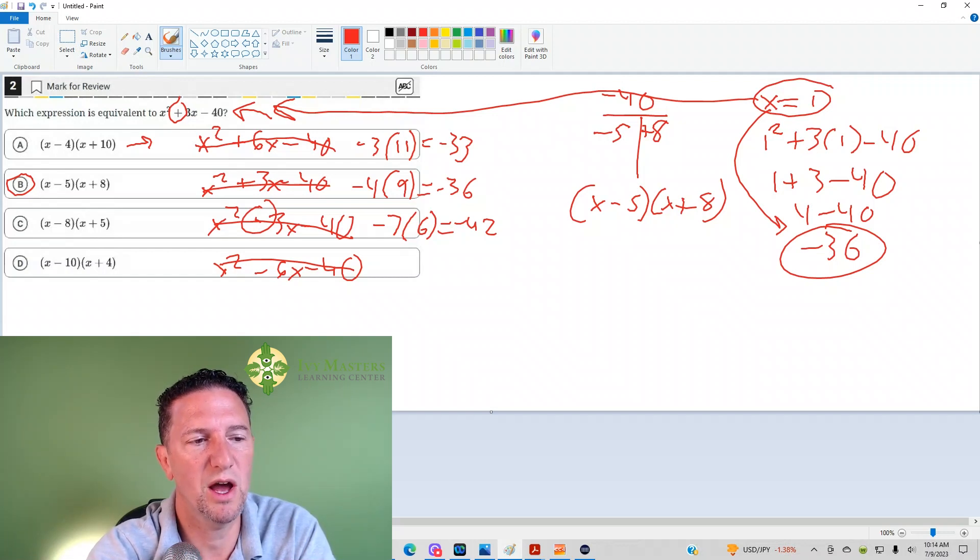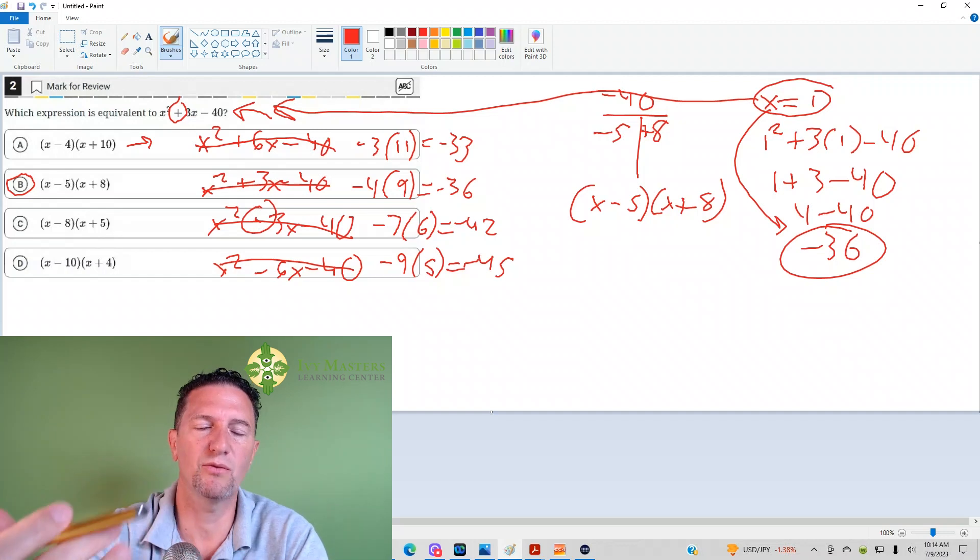And answer choice D, I've got 1 minus 10, negative 9, 1 plus 4, I get 5, and then I get negative 45. Not the negative 36 I'm looking for. So once again, the answer is B.